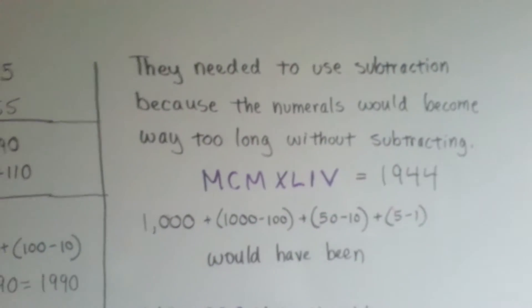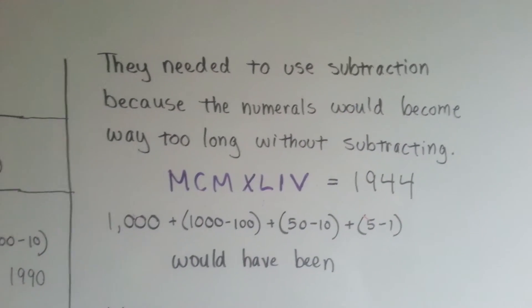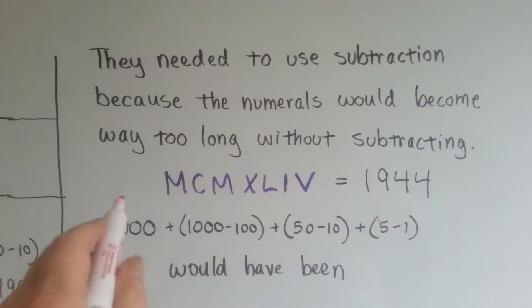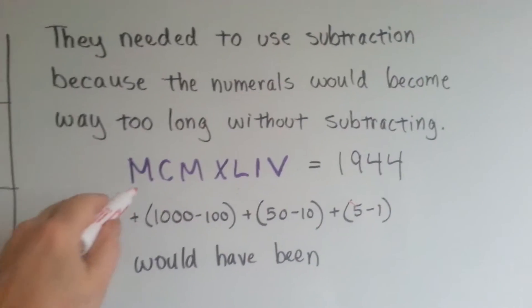They needed to use subtraction because numerals would become way too long without subtracting. This, in the purple, means 1944.